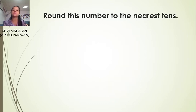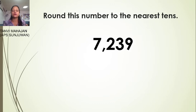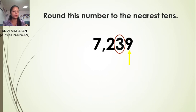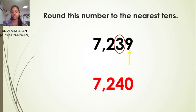Next, round this number to the nearest ten: seven thousand two hundred thirty-nine. Three is in the tens place. The next door number is nine, which is more than five. So add one to three, and it becomes 27,240.